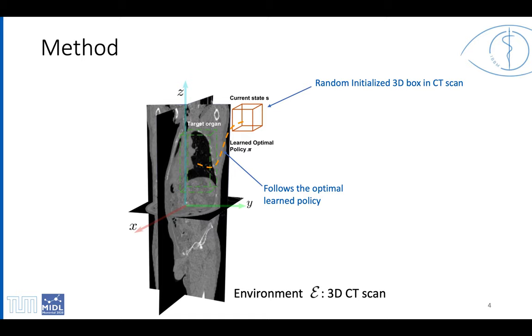Starting from a random box in the 3D scan, the agent learns to deform the box by following a sequence of actions which brings the box to the target.